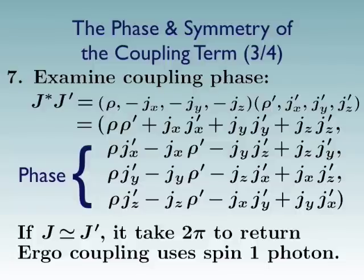And what sort of symmetry do they have? Well, if J is almost equal to J prime, what we're looking for are factors of two or a half that would speed up how things go around a circle. But these things don't add up. They don't help each other out. And so it's going to take two pi to return the phase to where it started. And therefore, the coupling uses a spin one photon. And this is the stuff of EM.